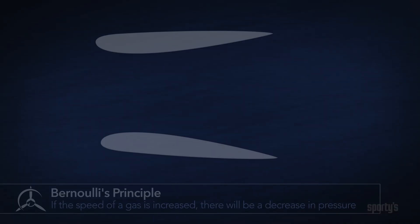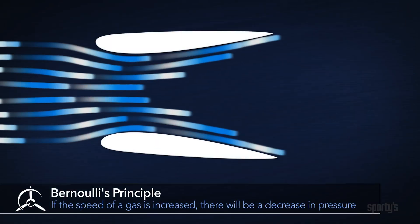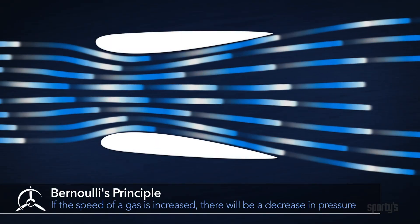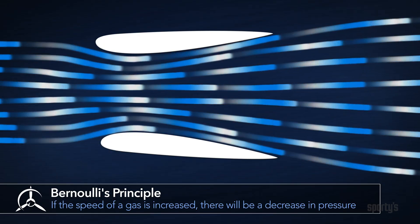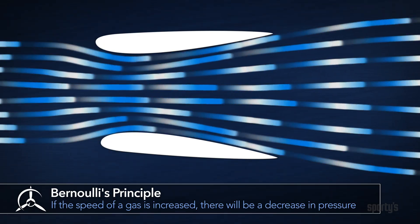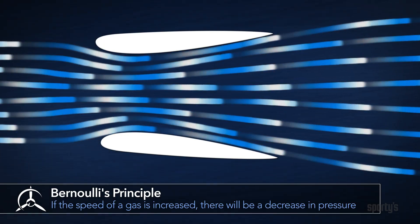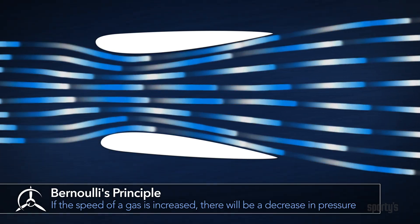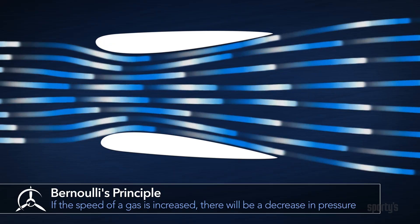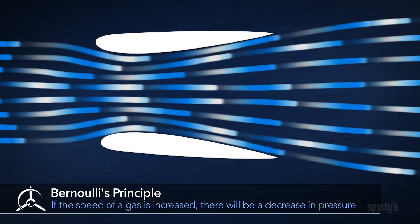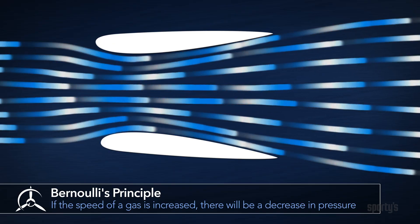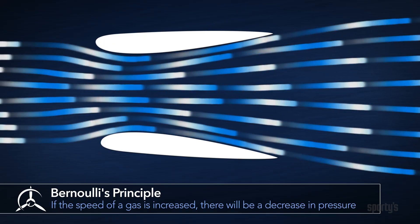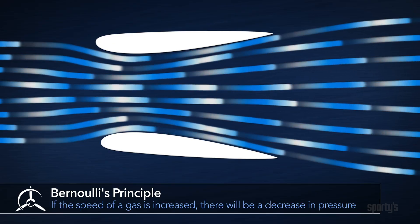A Swiss mathematician, Daniel Bernoulli, found that if the speed or velocity of a fluid or gas is increased, there will be a decrease in pressure at the point of the increase in speed.